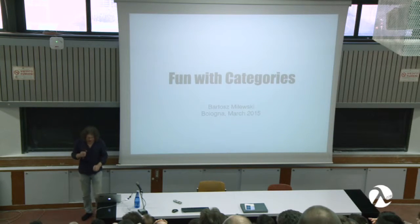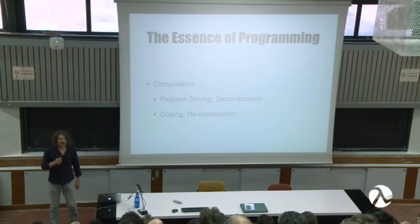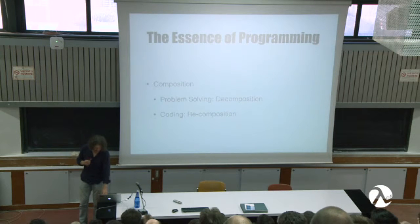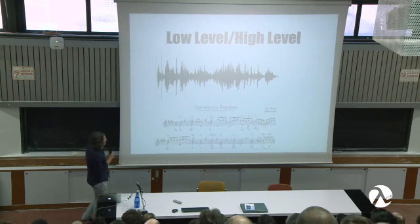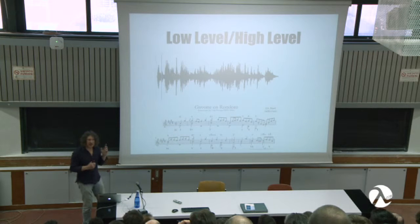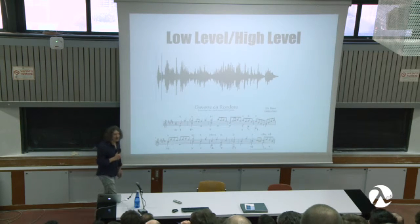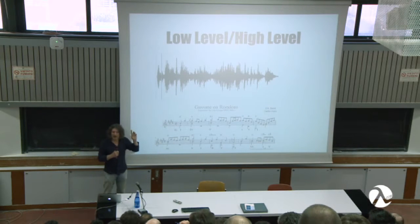And who knows best about composition? Musicians, right? They are the composers. They've been composing stuff forever. So let me talk about how musicians approach this. These are two representations of the same piece of music by Johann Sebastian Bach. You probably can't hear this, but this is what Bach was hearing in his head. What kind of notation did he use? He didn't use this notation — this is just bytes, this is the sampling of sound, very low level. He used the standard musical notation, which is very abstract.